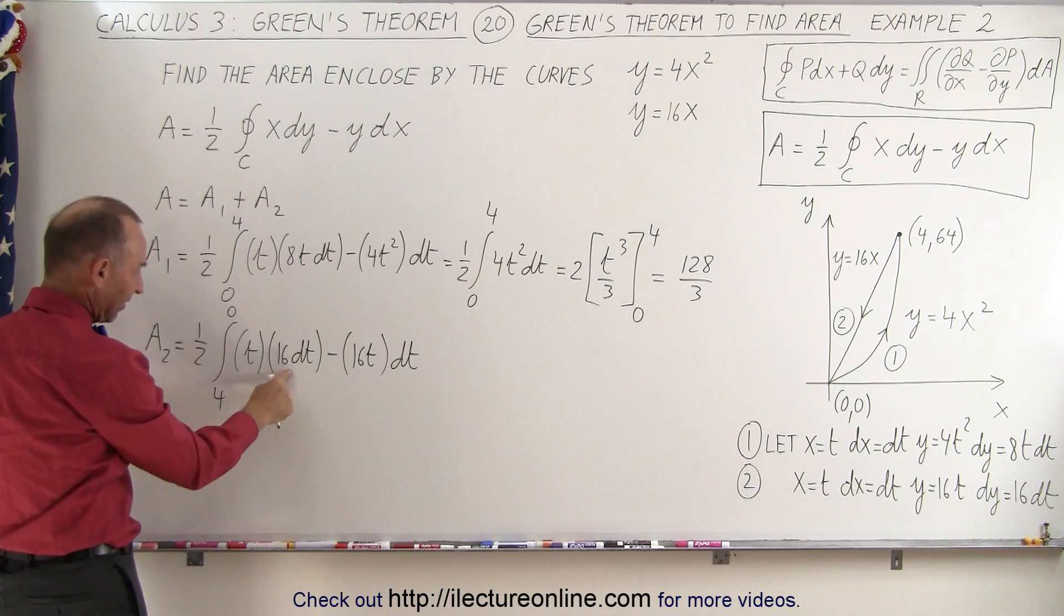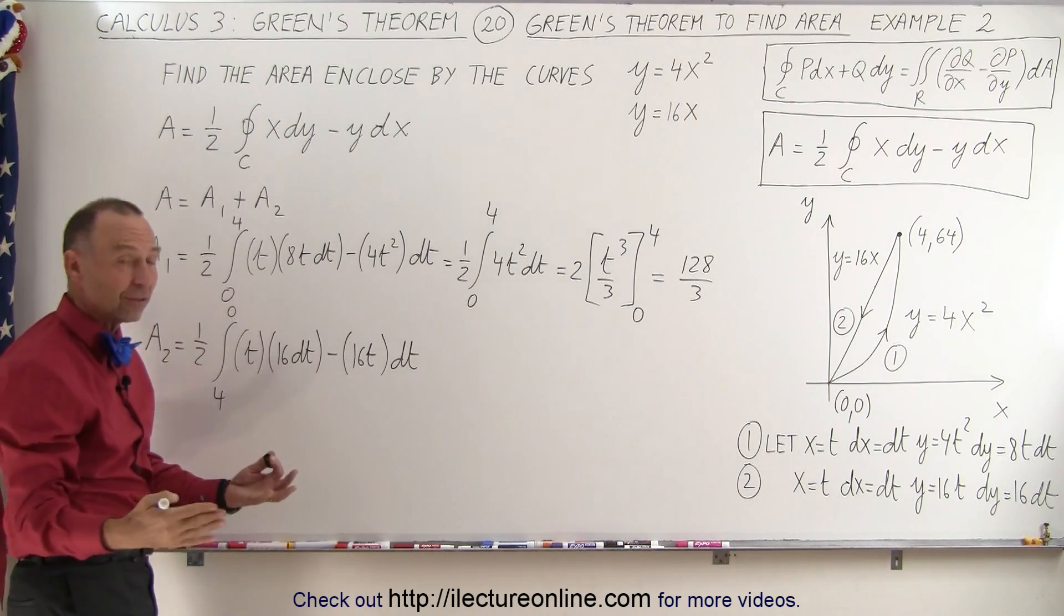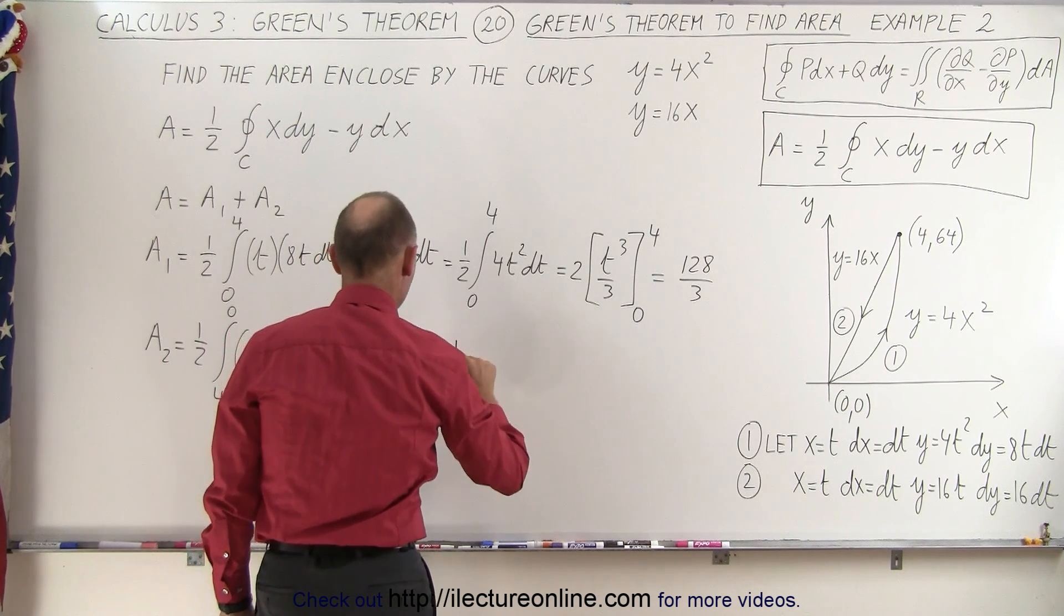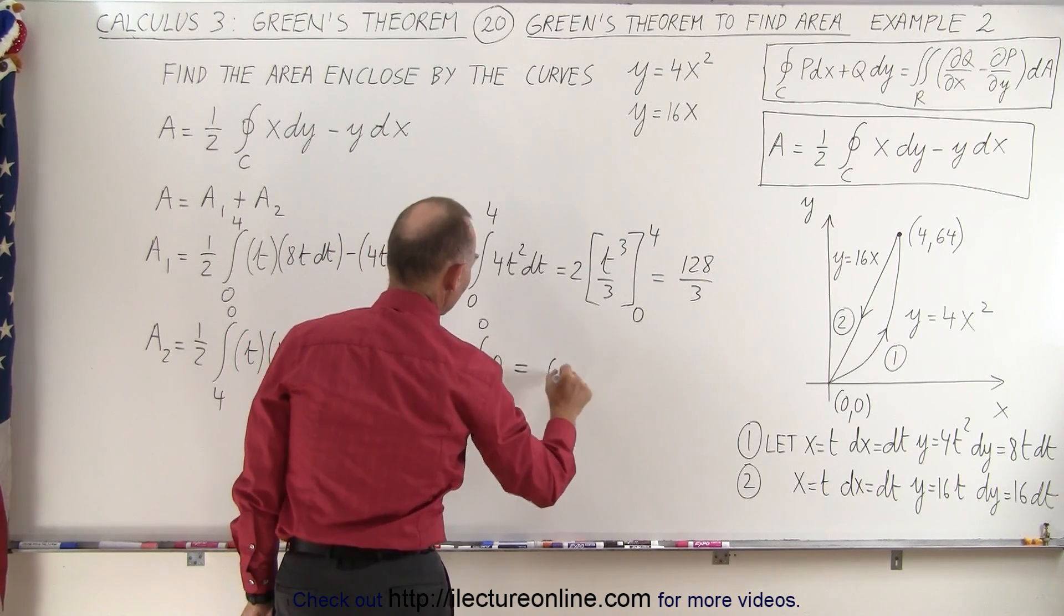But notice here we have a 16t dt minus 16t dt, which is equal to zero. So this is equal to one-half times the integral from four to zero of zero, which is zero.